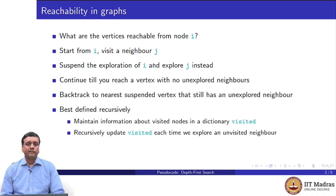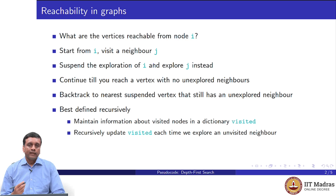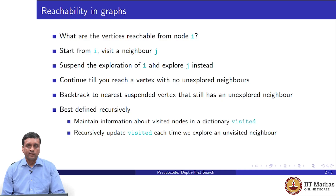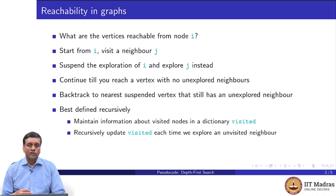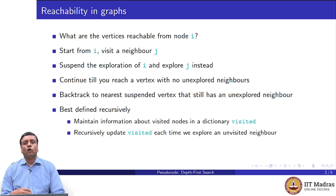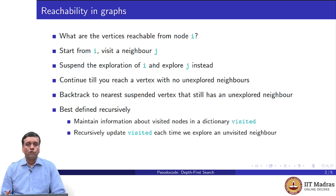This procedure called depth first search is best described recursively. To make the recursion work, we have to ensure that when we explore the neighbor of i, we do not come back and start exploring i again. We have to say that i is already being explored — it has already been visited. We maintain extra information about which nodes have been visited and keep incrementing this. Once a node is visited, it will not be re-explored. This is why the computation keeps reducing in size: depth first search keeps calling itself with a smaller set of nodes to explore, and eventually when there are no nodes left, it returns without doing anything.